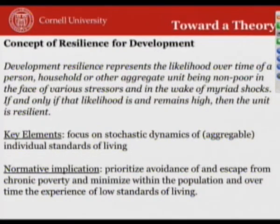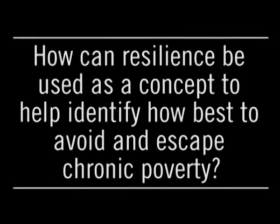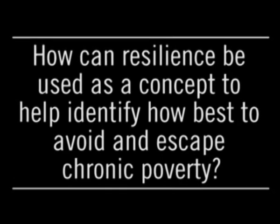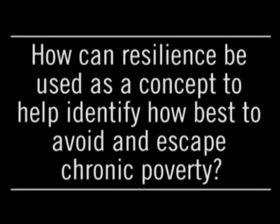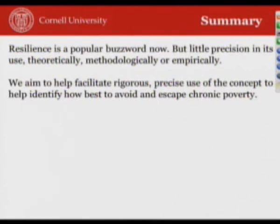The normative implication here is that we prioritize the avoidance of, and the escape from — and let me emphasize — the escape from chronic poverty. There is a way of putting a pro-poor focus at the heart of resilience by focusing on what does it take to change the likelihood, the duration, the intensity of the experience of poverty. And we can measure this at scale, multiple scales — the Foster-Greer-Thorbeck-type tools of decomposable poverty measures carry through directly.